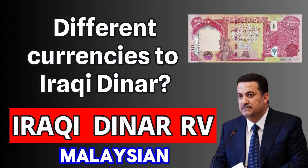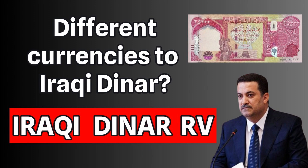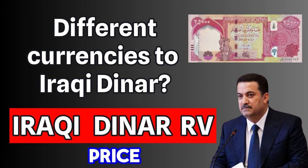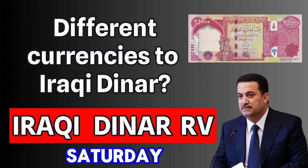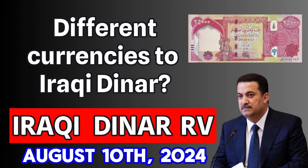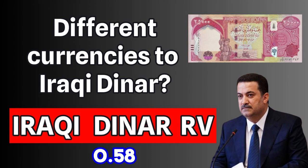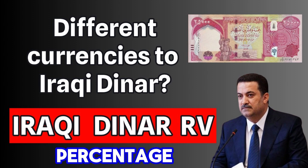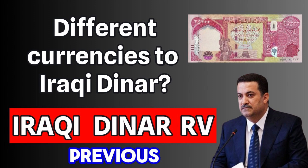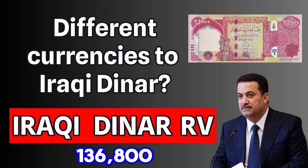The conversion rate of Malaysian ringgit to Iraqi dinar was 341.834. The price of Malaysian ringgit today, Saturday 10 August 2024, is in the 136,000 riyal market, which has decreased 800 riyals, 0.58%, compared to the previous day. Each unit of Malaysian ringgit is sold at the price of 136,800 riyals.